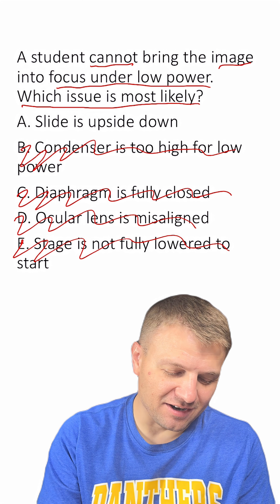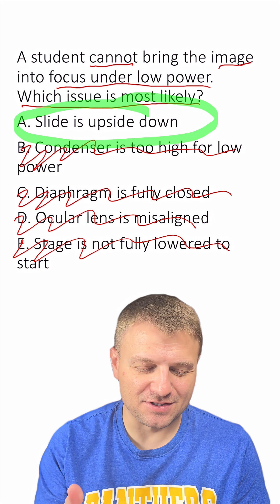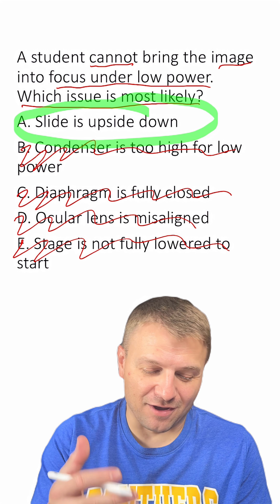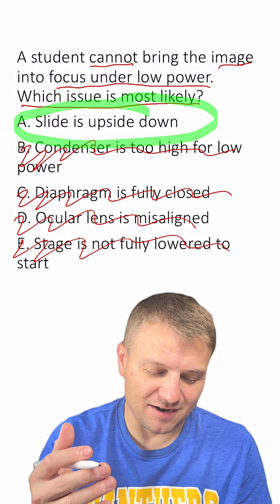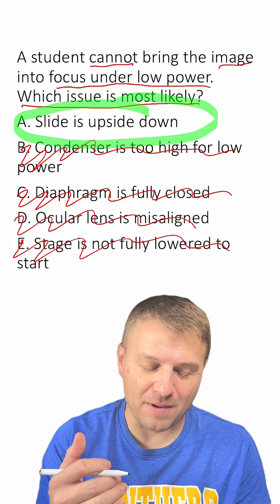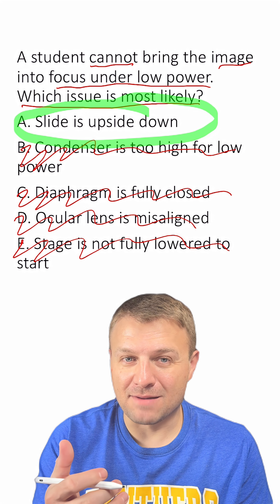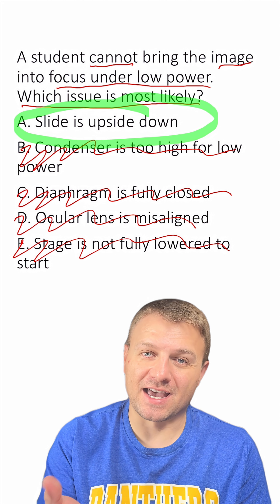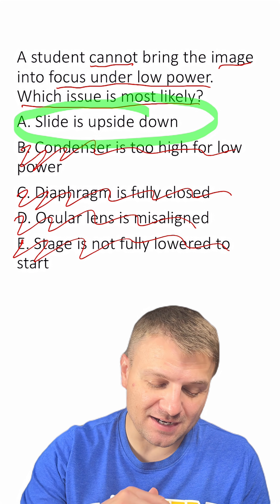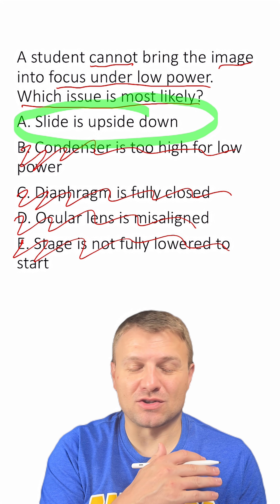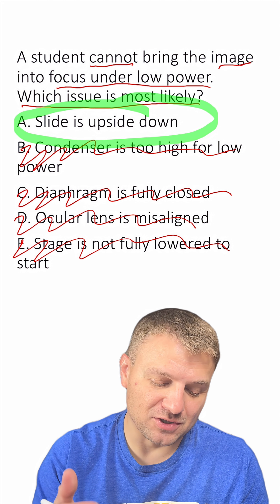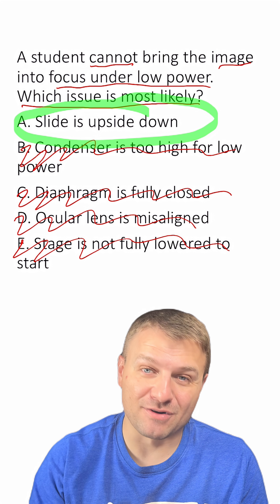The correct answer here is A. This is typically what happens when a student can't figure out how to focus their microscope under low power. A lot of times what they'll do is have the microscope slide flipped upside down, and then you just can't focus it on a low power or low objective. So A is the right answer here.